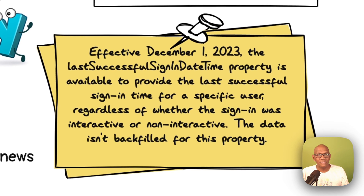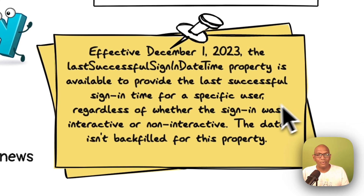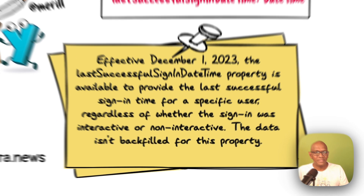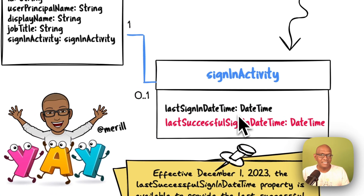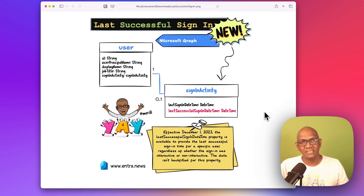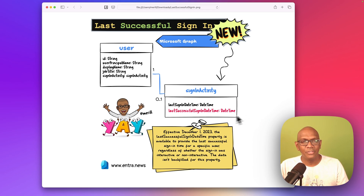A quick thing to note is that this will only populate from the 1st of December, so only sign-ins that happened after the 1st of December are recorded in this attribute. Now there still is the other field called the last sign-in date and time, but that includes failed attempts as well. So if you only want to find the last time a user successfully signed in, you'll want to use this new field.